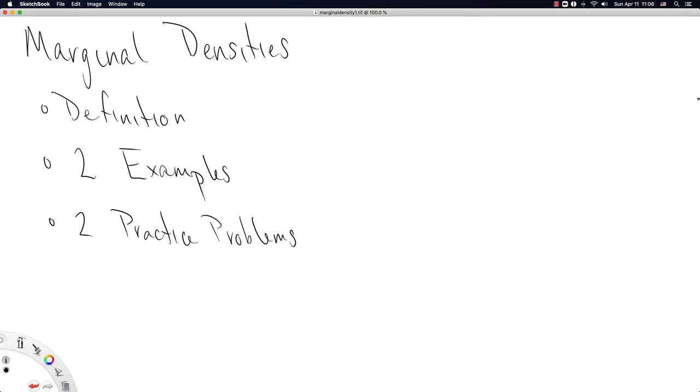This video is going to be about marginal densities, marginal density functions. This is a direct follow-up from joint density functions since marginal density functions are defined relative to joint density functions. So we'll start with that definition, then we'll look at two examples, and then I'll leave you with two practice problems so that you can get some extra practice with these concepts.